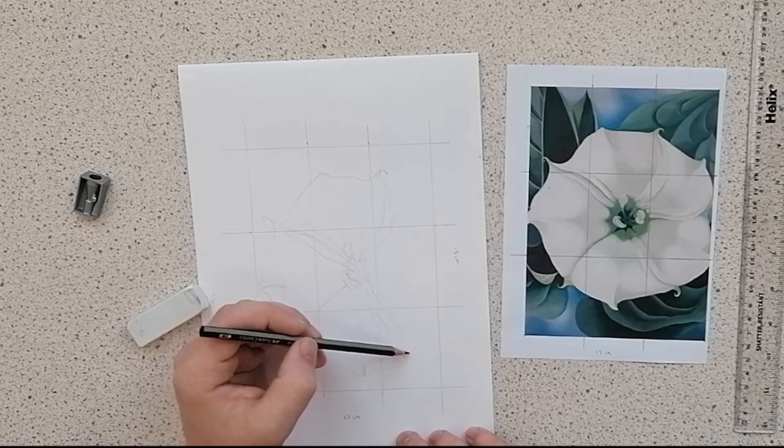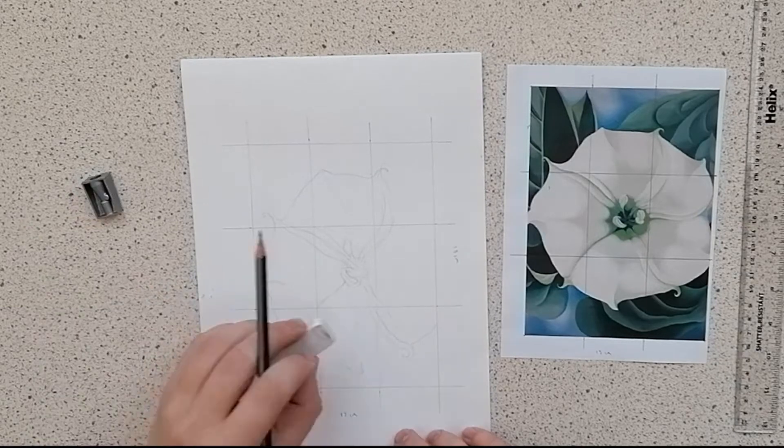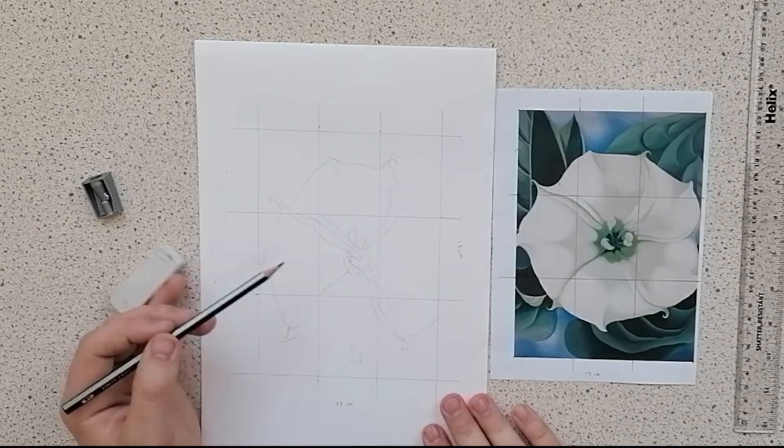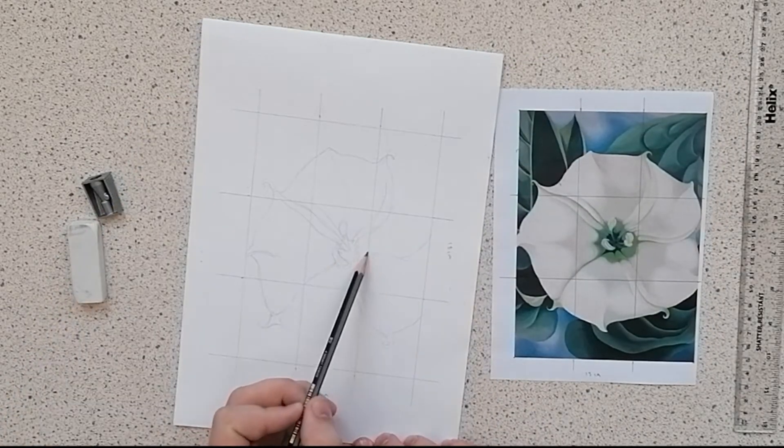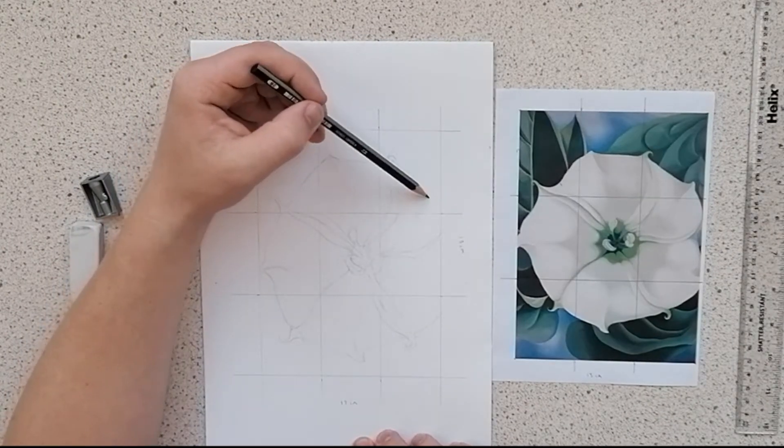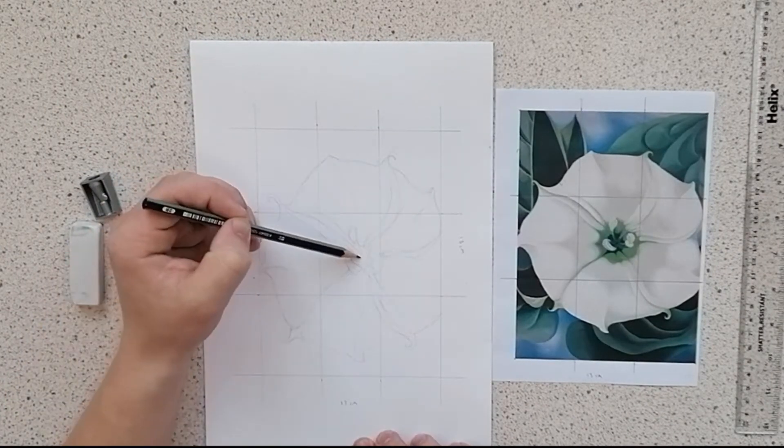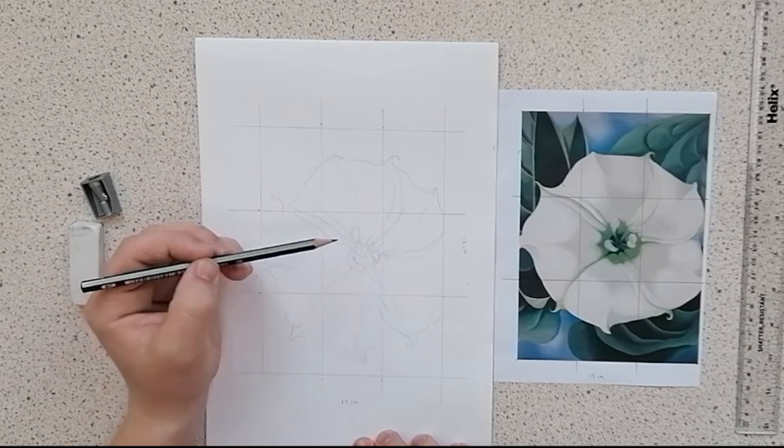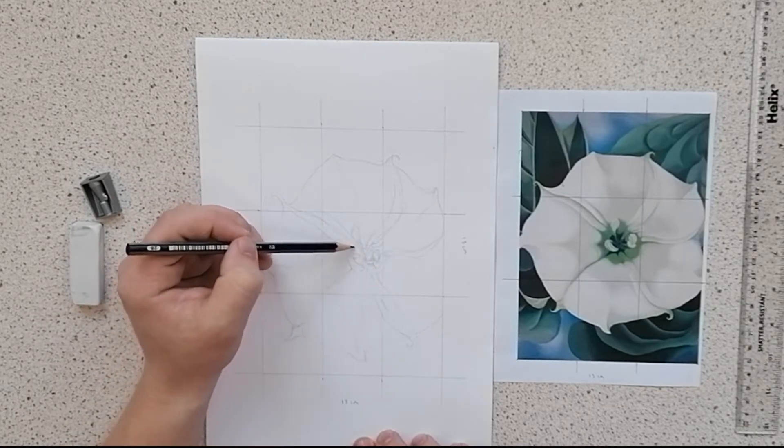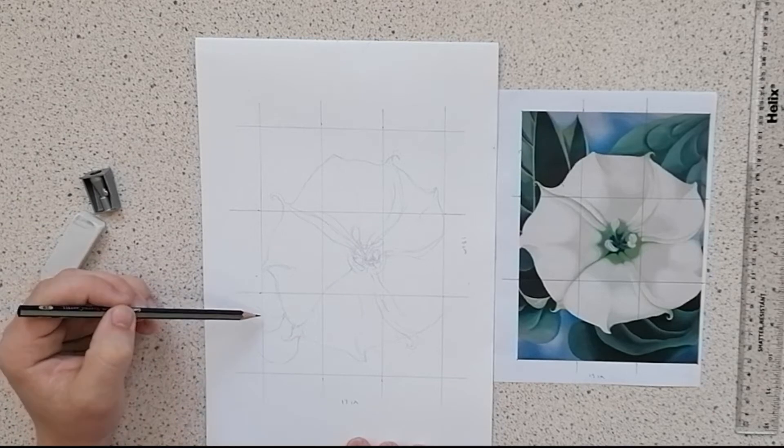And keep checking back at the photograph. Look at the image—does that bit of detail belong there or is it in the wrong place? Make those changes. Remember what grid you're working in at the time and just keep comparing your drawing to the photograph and eventually you will get an accurate outline.